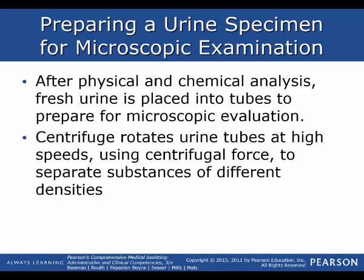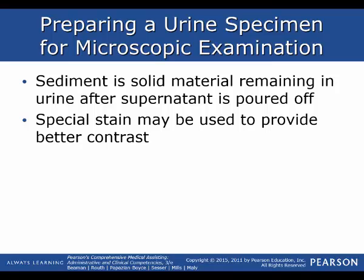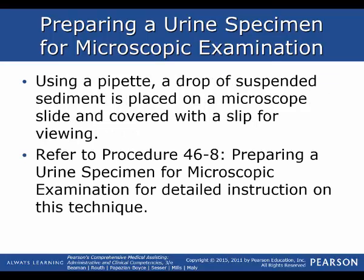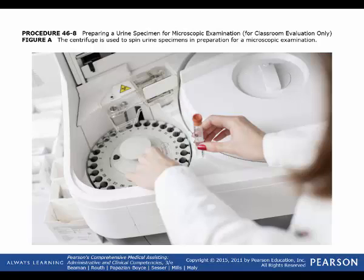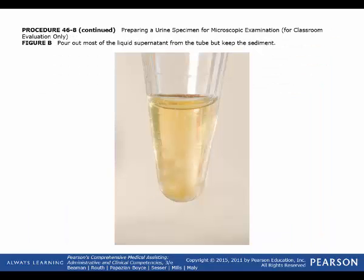After physical and chemical analysis, fresh urine is placed into tubes for microscopic evaluation. A centrifuge rotates urine tubes at high speeds using centrifugal force to separate substances of different densities. Sediment is the solid material remaining in the urine after the supernatant is poured off, and a special stain may be used to provide better contrast. Using a pipette, a drop of suspended sediment is placed on a microscope slide and covered with a slip for viewing. Refer to procedure 46-8 for detailed instructions on this technique.